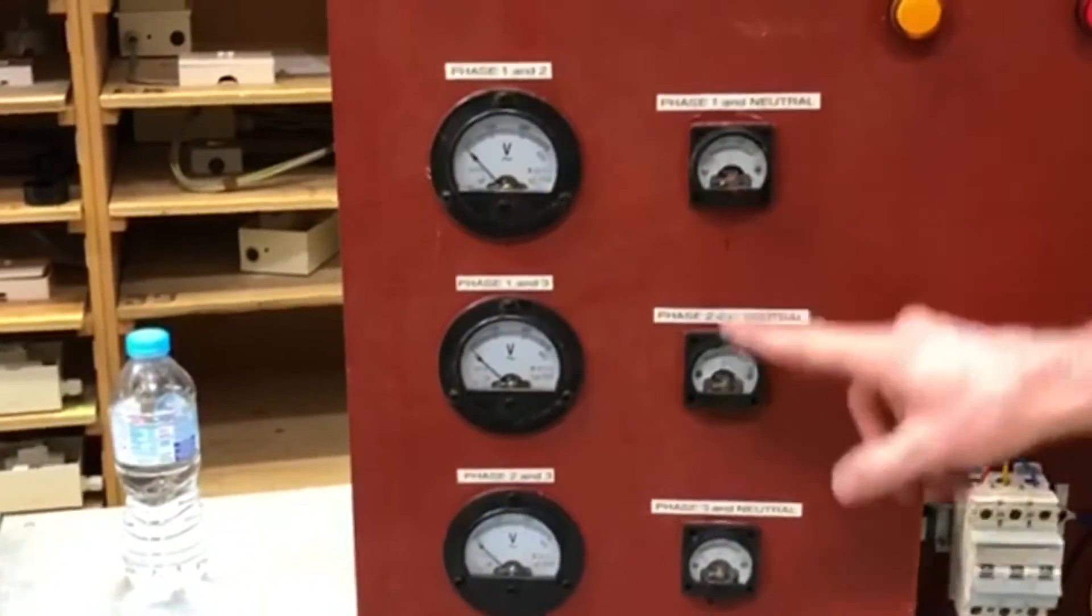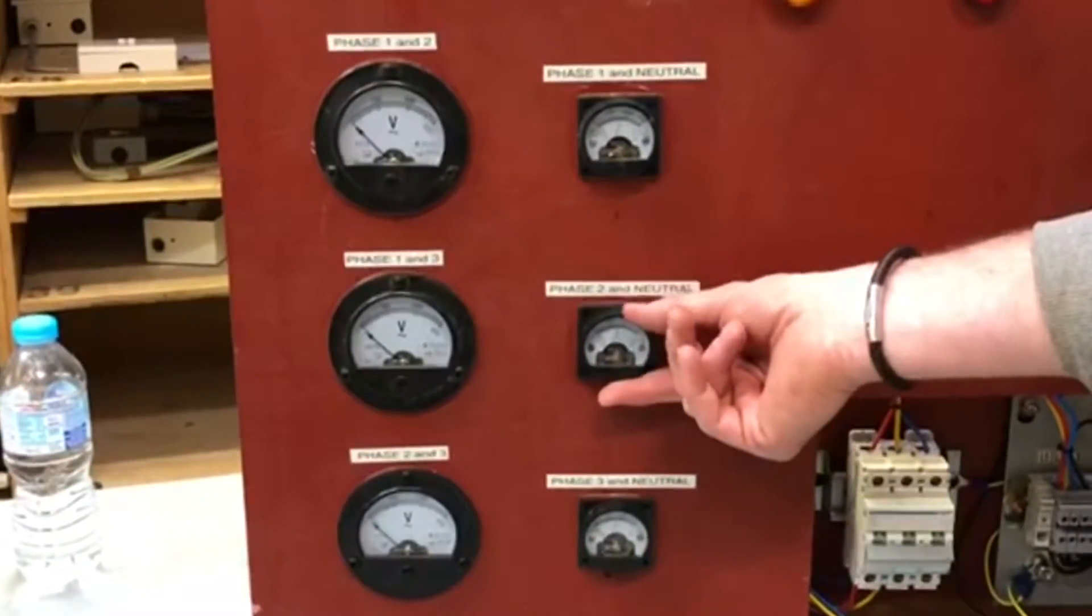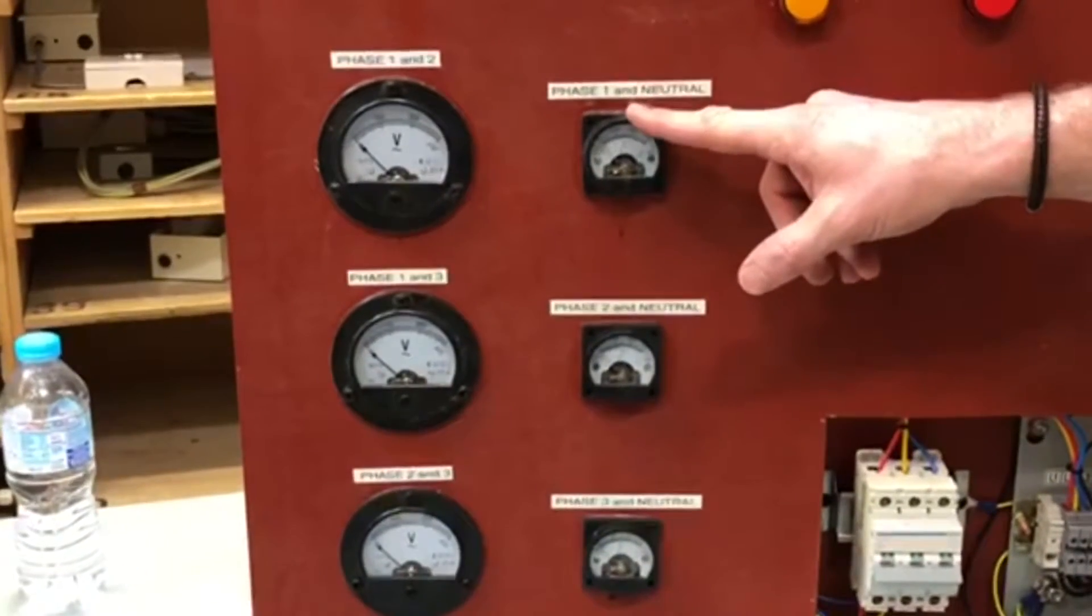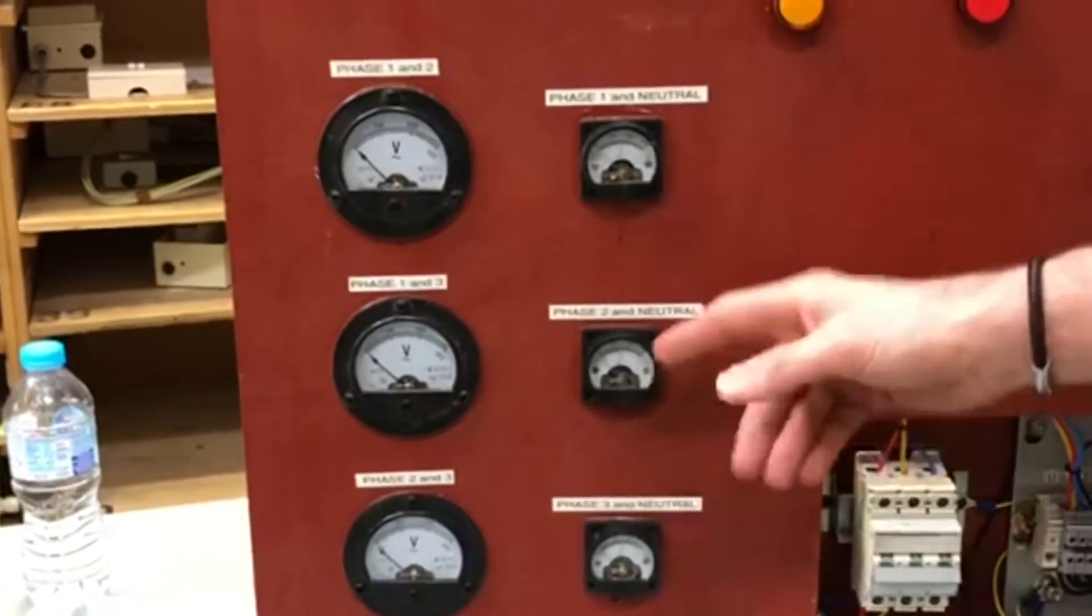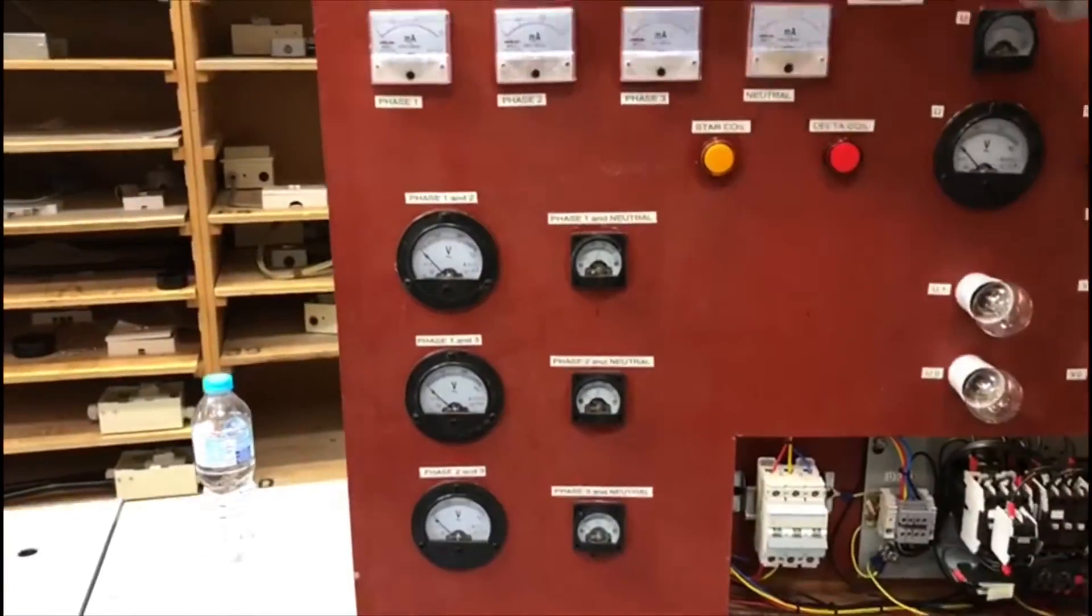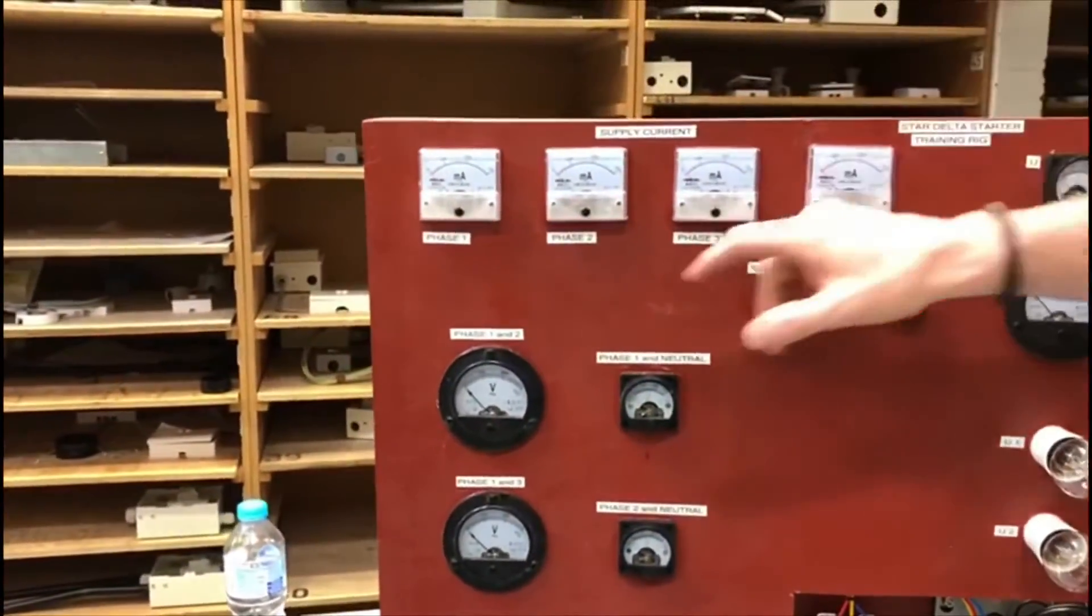On this side, slightly smaller ammeters voltmeters, and they are the phases between the three different phases and neutral. So they should be reading 230 most of the time.